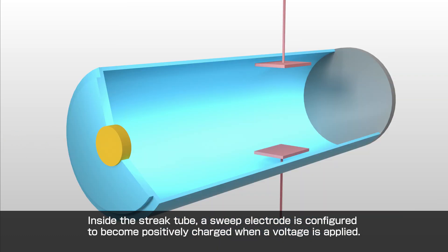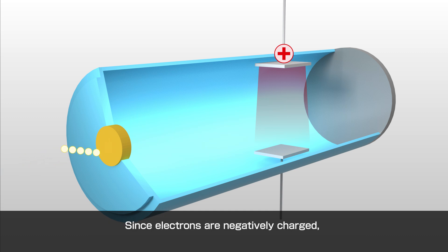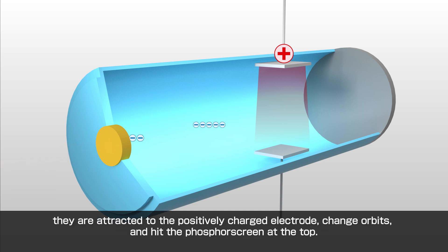Inside the streak tube, a sweep electrode is configured to become positively charged when a voltage is applied. Since electrons are negatively charged, they are attracted to the positively charged electrode, change orbits, and hit the phosphor screen at the top.